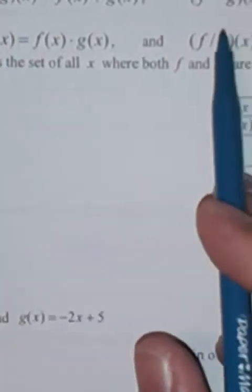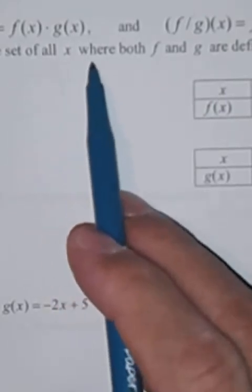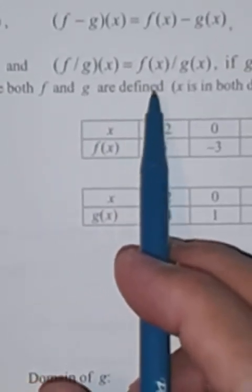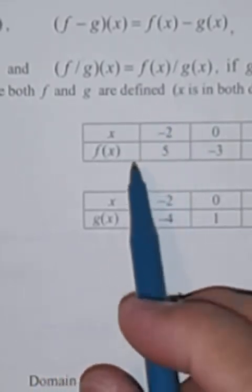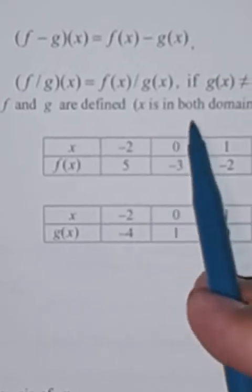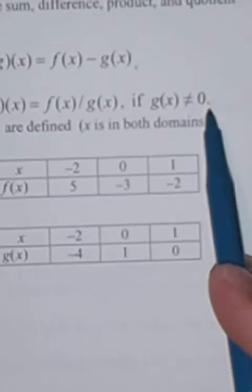The domain for each of those — f plus g, f times g, f minus g, and f over g — is the set of all x where both f and g are defined, because you have to have a number, or a y value, for f and a y value for g. Furthermore, when you're doing f over g, g of x cannot be zero.